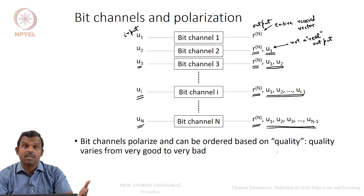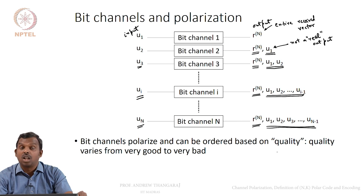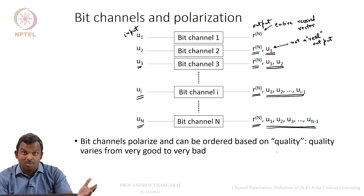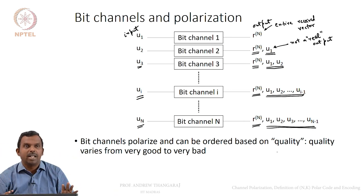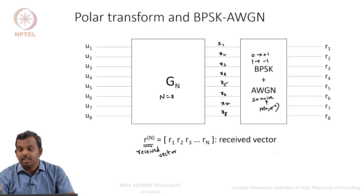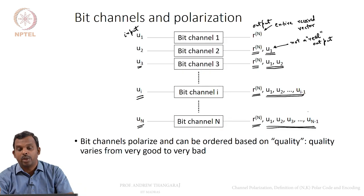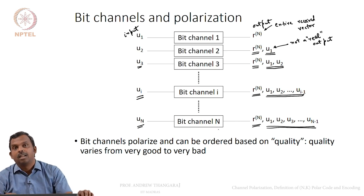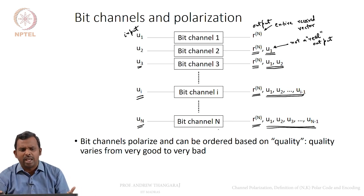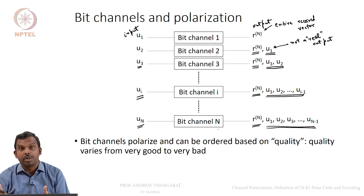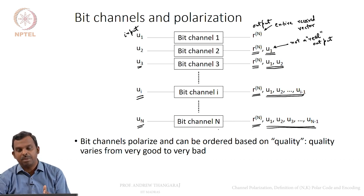What is special about these split bit channels is that they are not similar at all — they are very different from each other in quality. Previously, all channels were the same; here, these N bit channels have very different behaviour. These channels have one-bit input but huge outputs, and you assume previous bits are available, so they can be very different in quality.